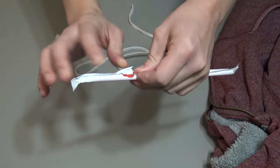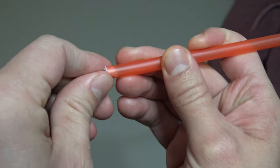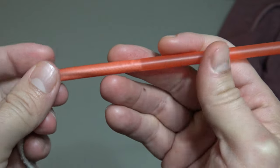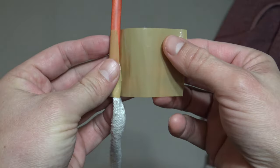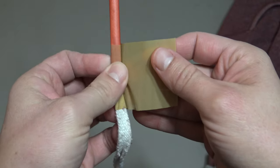Enter the straw. Grab a straw and stick the end of the string inside the straw. Then take a piece of tape, wrap the tape around the string and the straw at the same time to secure it so it doesn't fall out.